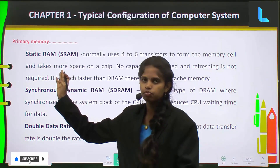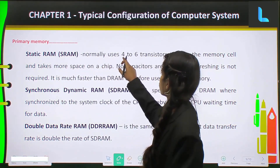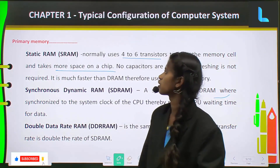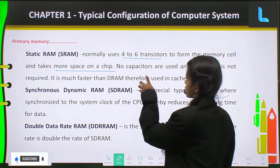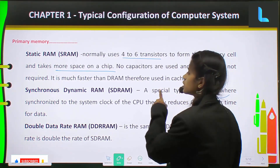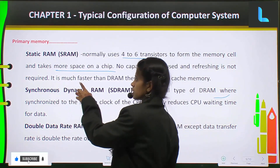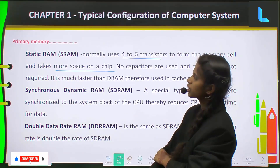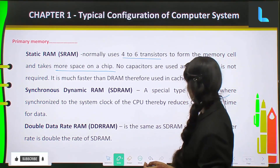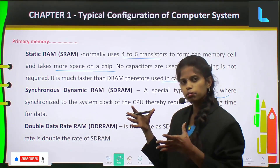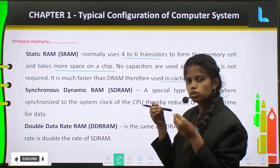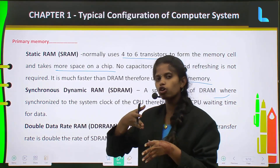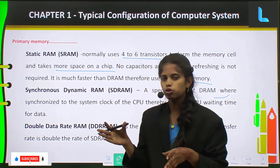Next comes Static RAM. It uses 4 to 6 transistors to form a memory cell and takes more space on a chip. No capacitors are used and refreshing is not required. It is much faster than DRAM, therefore it is used in cache memory. Only transistors are used and it usually uses 4 to 6 transistors to make a memory cell.